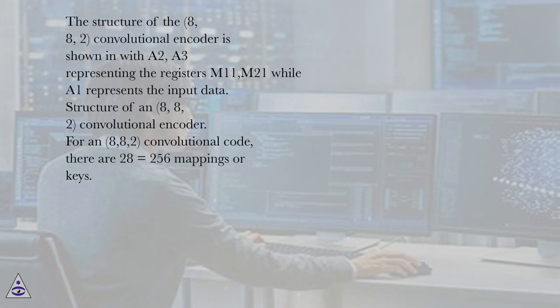For an 8,8,2 convolutional code, there are 2^8 = 256 mappings or keys.